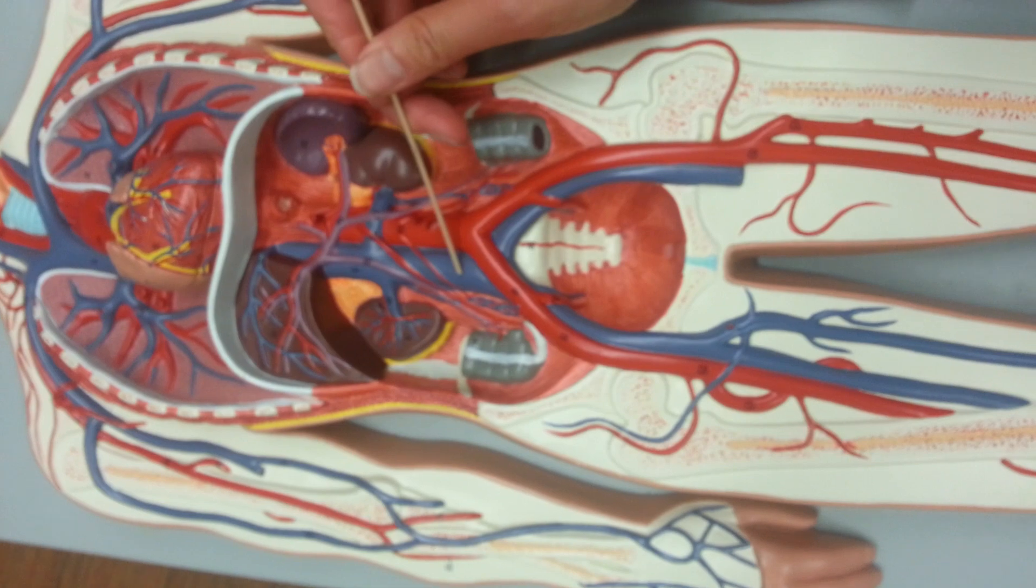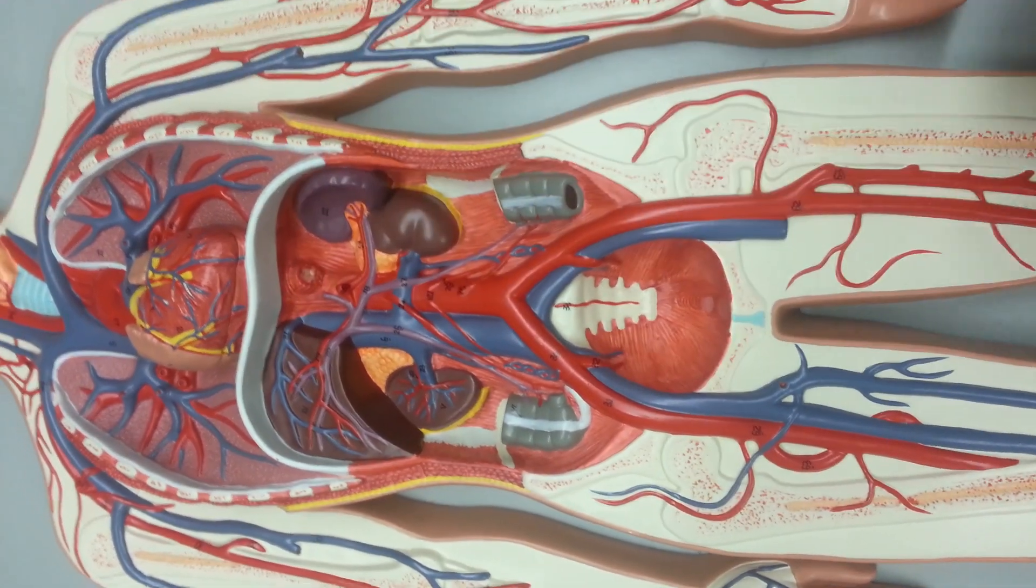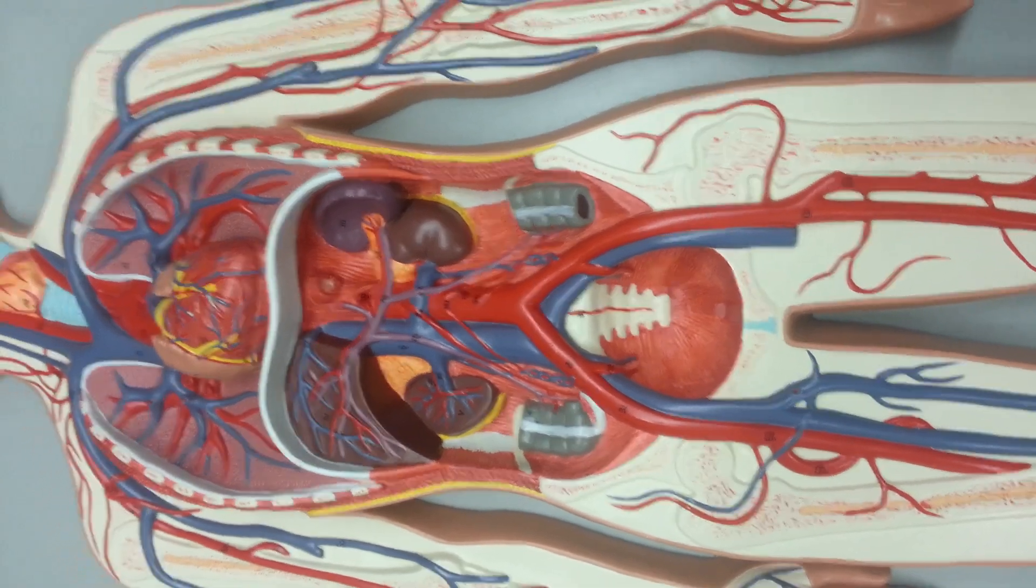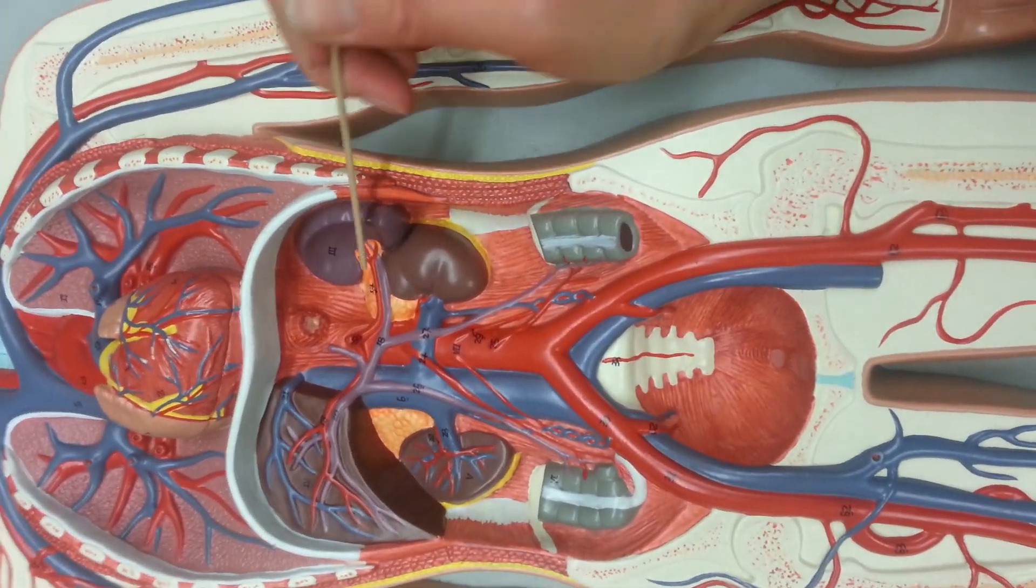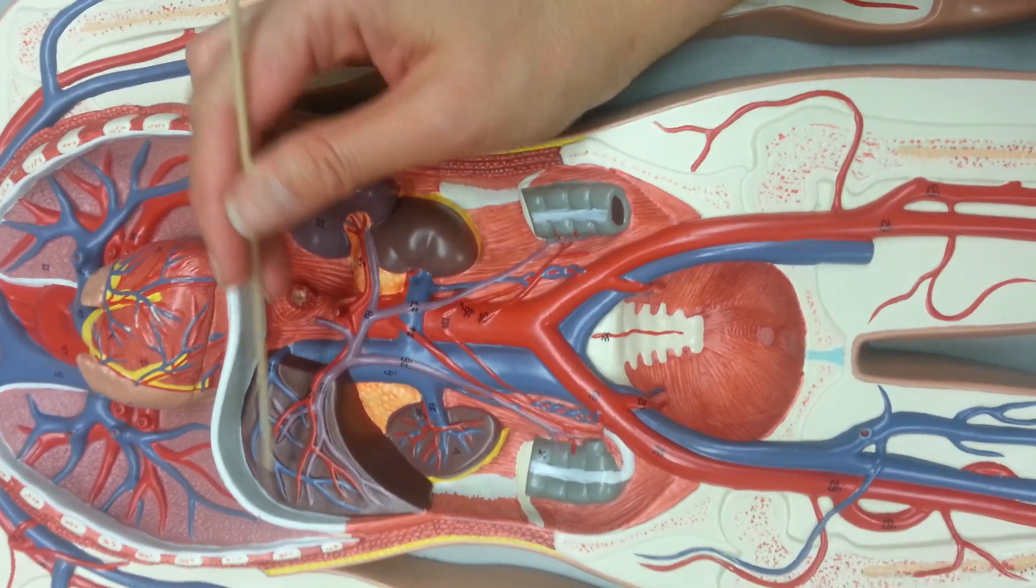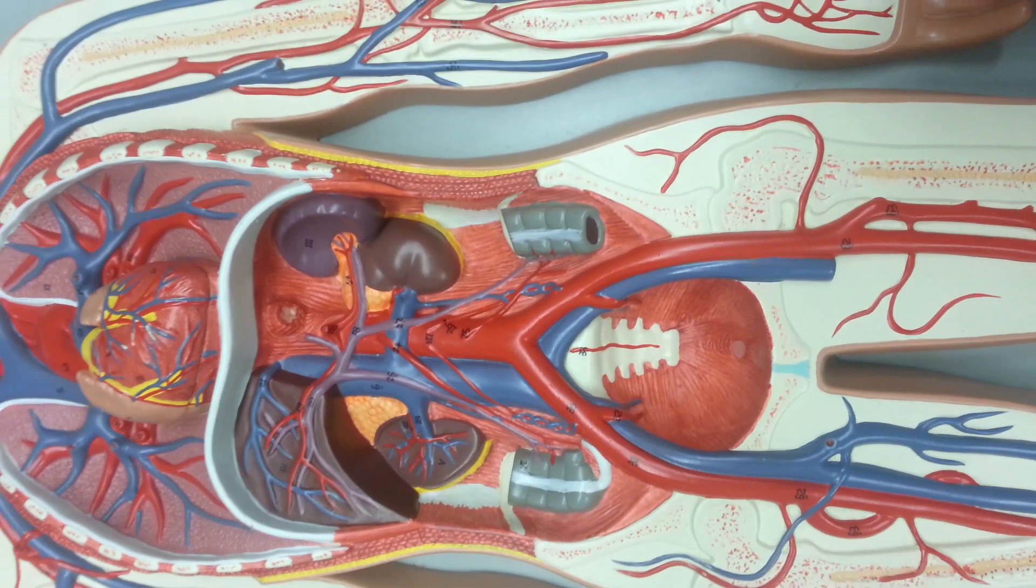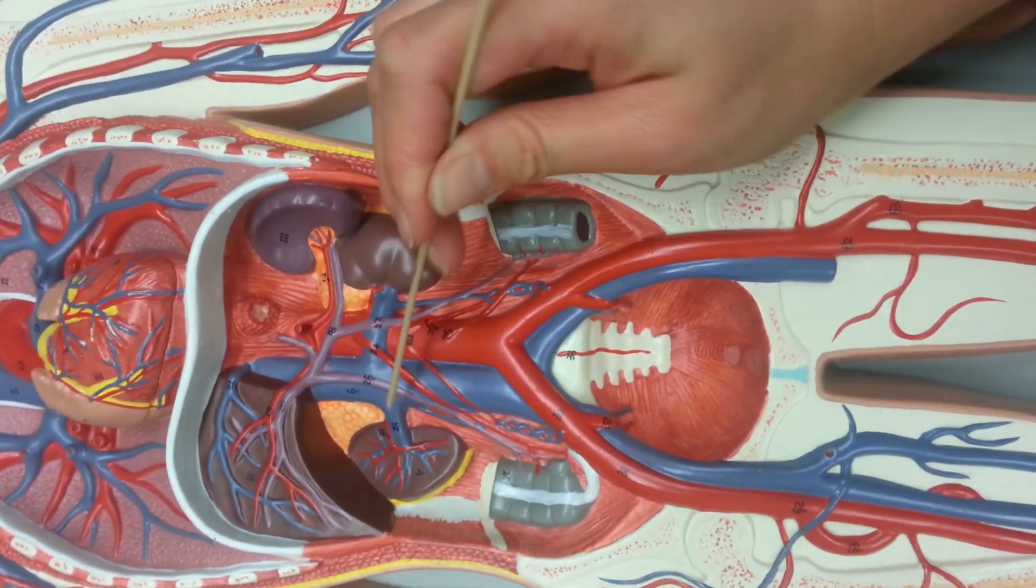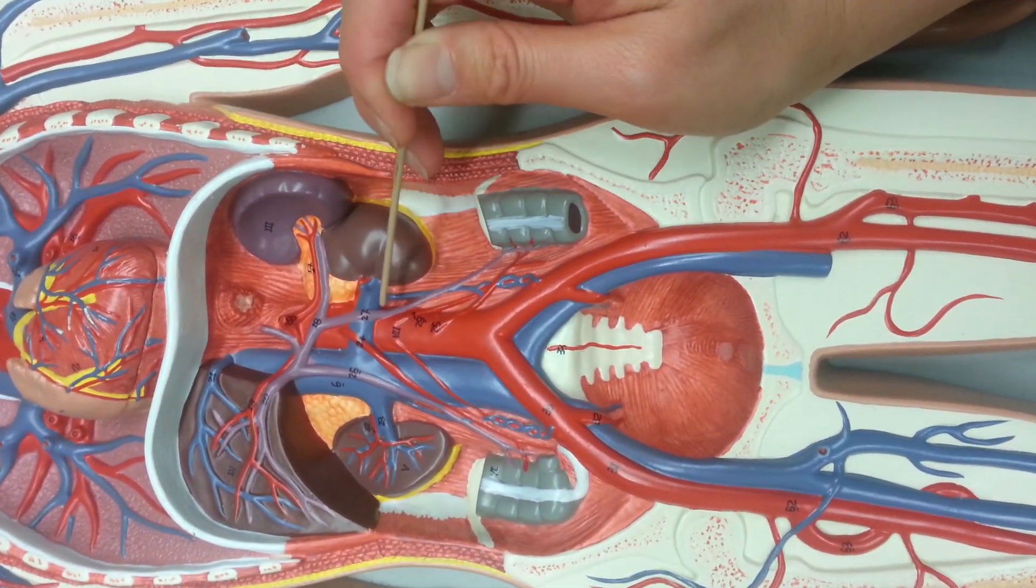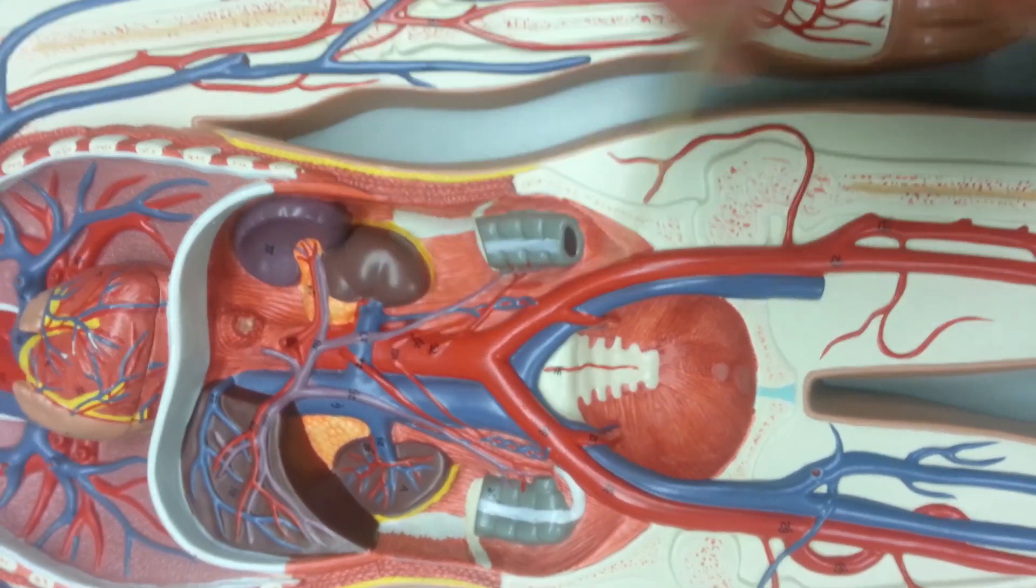Now right here we have the inferior vena cava bringing blood back from below the heart, and we also have the spleen. So the splenic vein is right here. We have the liver, so the hepatic vein is right here. And then we have our kidneys, so these two are our renal veins. They all merge onto the inferior vena cava to go back to the heart.